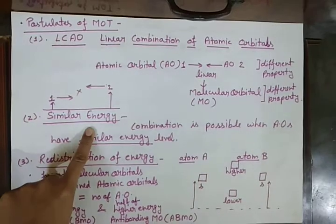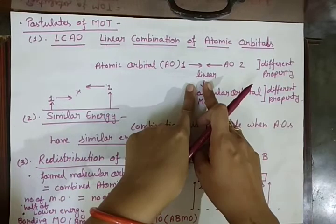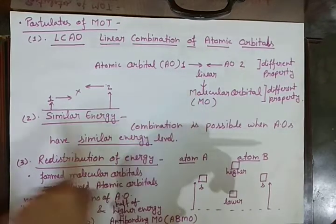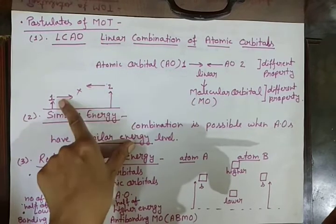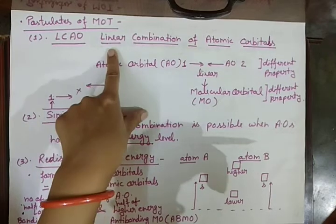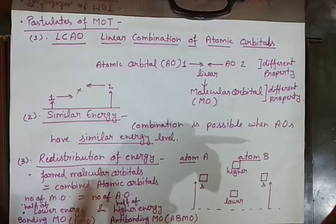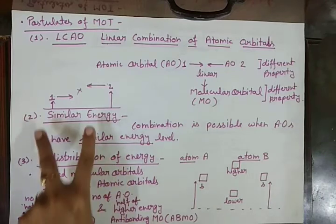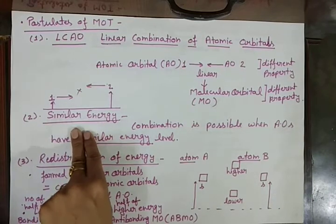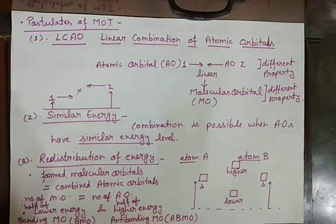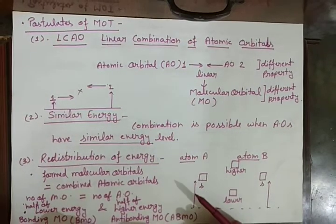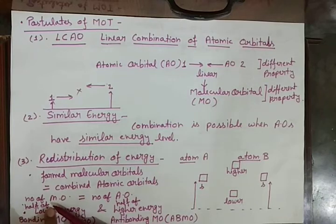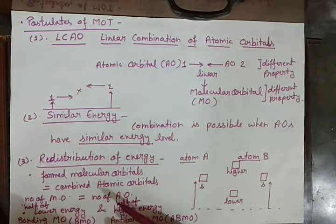Second is similar energy — the linear combination is possible when the orbitals are of similar energy. If there is a gap between the energy levels of two different orbitals, then linear combination is not possible. Third was redistribution of energy — when two or more orbitals linearly combine, their energy combines and is redistributed. The number of combining atomic orbitals equals the number of molecular orbitals formed.